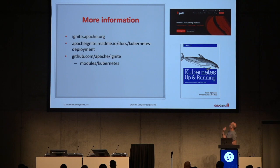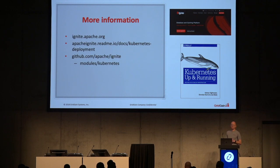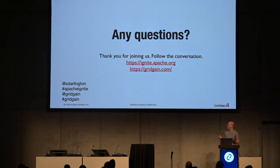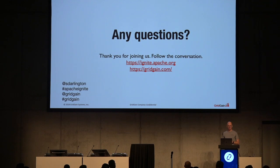There's also a useful book: 'Kubernetes Up and Running.' I work for GridGain, which is the company that supports commercial versions of Ignite — everything I've talked about today is in the open source version, but if you need professional support, GridGain is the place to go. I'll be around for most of the rest of the day — say hello if you see me. Thank you very much for your time, hope you found this useful.